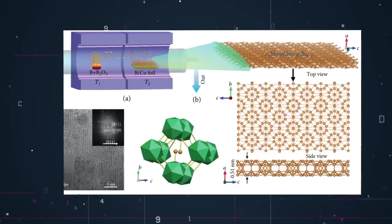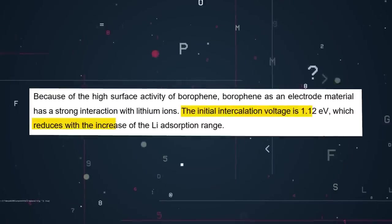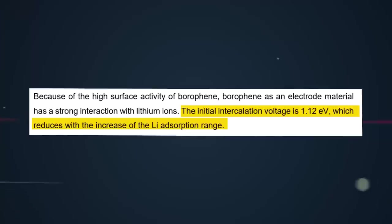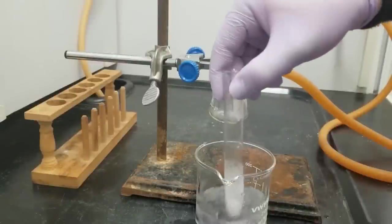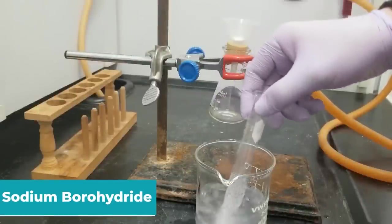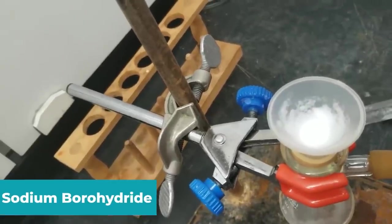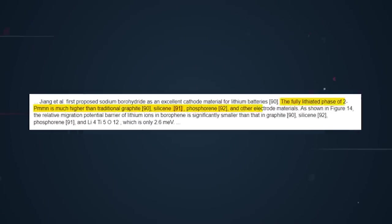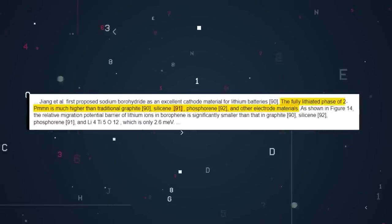Because of the high surface activity of borophene, borophene as an electrode material has a strong interaction with lithium ions. The initial intercalation voltage is 1.12 eV, which reduces with the increase of the lithium adsorption range. It wasn't long after the discovery of borophene that scientists proposed it as an excellent cathode material for lithium batteries. The fully lithiated phase of 2 pmmn is much higher than traditional graphite, silicene, phosphorene, and other electrode materials.